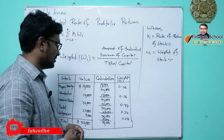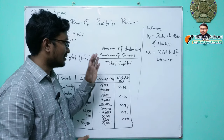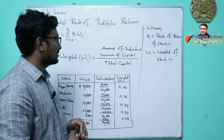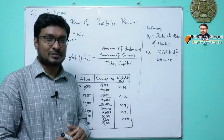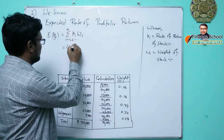Now that we have calculated the weights, we can use either a tabular method or the equation to find the portfolio expected return. We will use the equation. Inputting the values — expected rate of return and the computed weights — we write: (0.14 × 0.16) + (−0.04 × 0.18) + ...